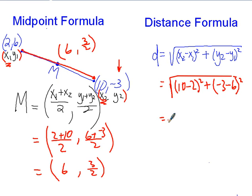And now we can go ahead and simplify. So 10 minus 2 gives me 8 squared. And negative 3 minus 6, I don't like subtracting, so I'm going to change that to plus a negative. So that gives me negative 9 squared.